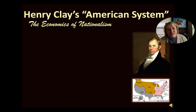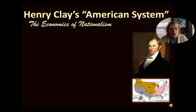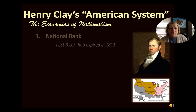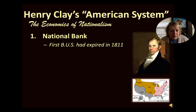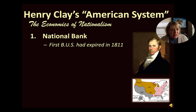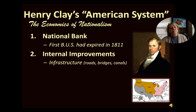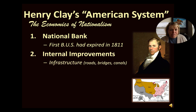The very first thing I want to talk about is Henry Clay's American System. This is going to be introduced during James Madison's presidency, during his second term, and it's all centered around nationalism — it's all about making the United States stronger and better. There are three key parts to the American System: one is a national bank. The First Bank of the United States, created by Hamilton's financial plan in 1791, expired in 1811, so we're without a national bank at this point. The second part is internal improvements, often called infrastructure — the building of roads, canals, and bridges — which helps with transportation across the country.